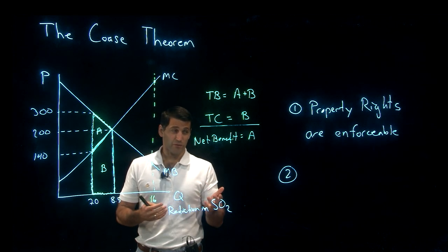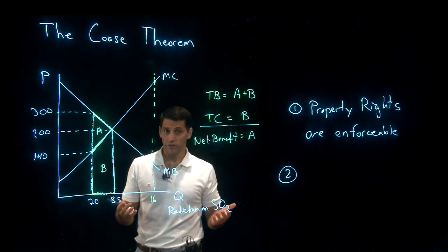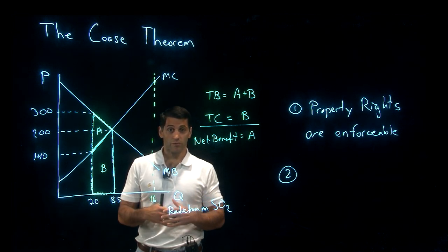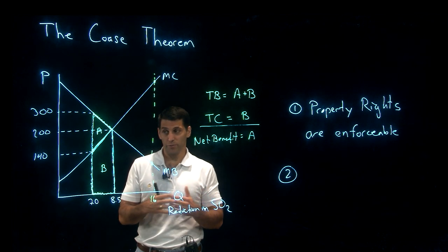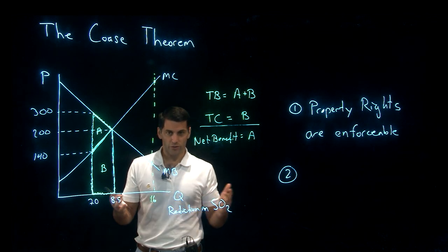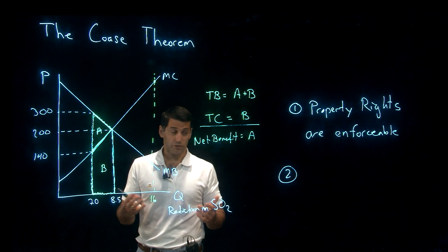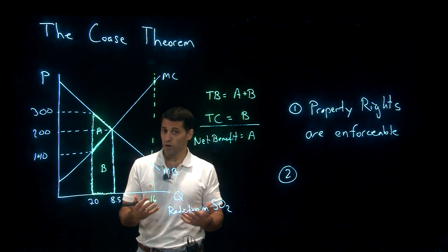Other examples where property rights are not enforceable include the oceans. If people are overfishing or dumping pollution into the oceans, who enforces property rights in the Pacific or the Atlantic? Those are scenarios where the Coase Theorem really won't work, because we don't have the ability to actually enforce property rights.